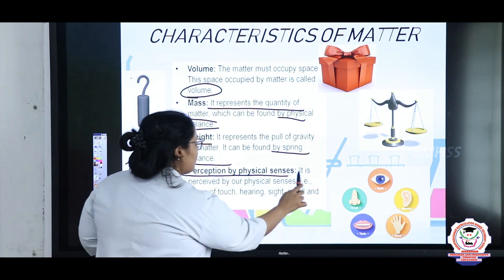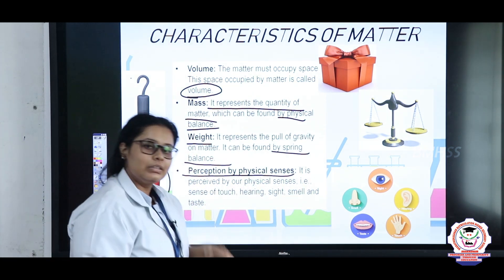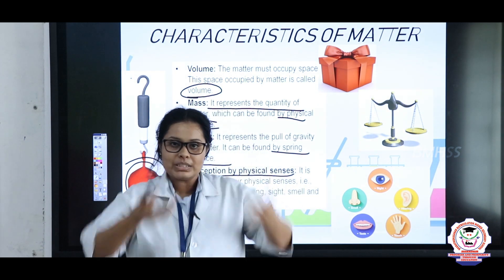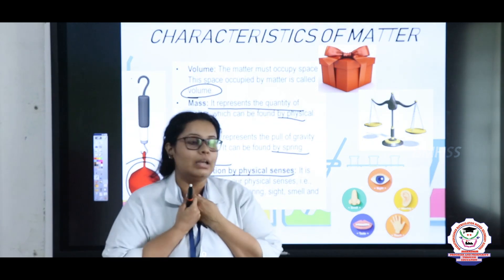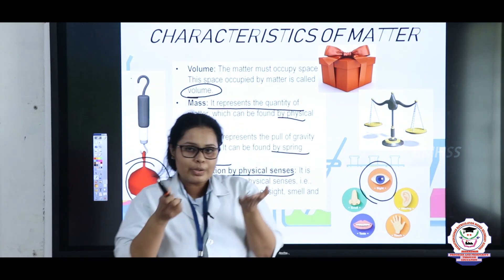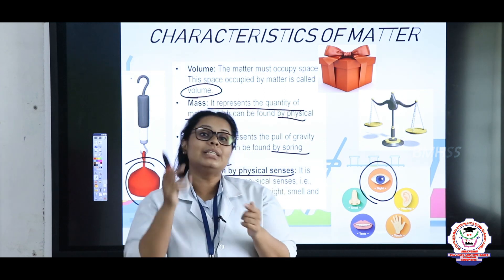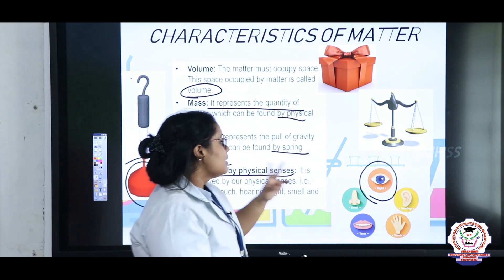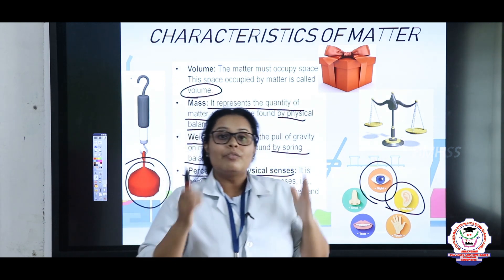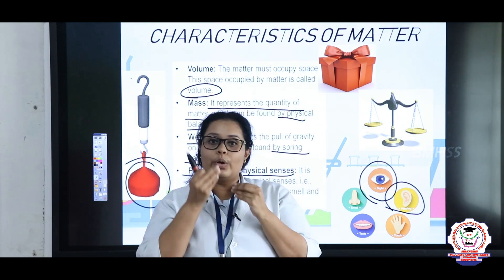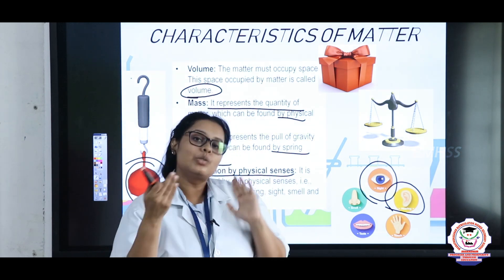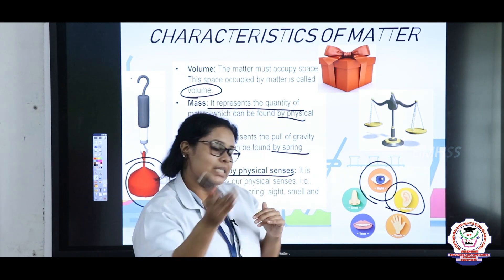The fourth characteristic is perception of physical senses. What is a physical sense? It means physically what we can feel. The first sense is sight — by seeing. If you can see something, that means it is matter. The second sense is hearing. Right now I am speaking to you, and my sound is traveling through the air to your ears — so even air is a kind of matter.